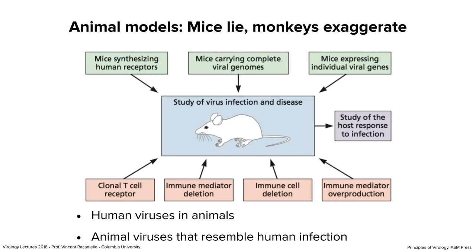You can also genetically manipulate the mice to make them more suitable models. In the immune system you can add clonal T cell receptors, delete specific subsets of immune cells — as in an experiment where we deplete antibodies or B cells or T cells with specific reagents — or overproduce specific immune mediators. There are lots of ways to use mice.